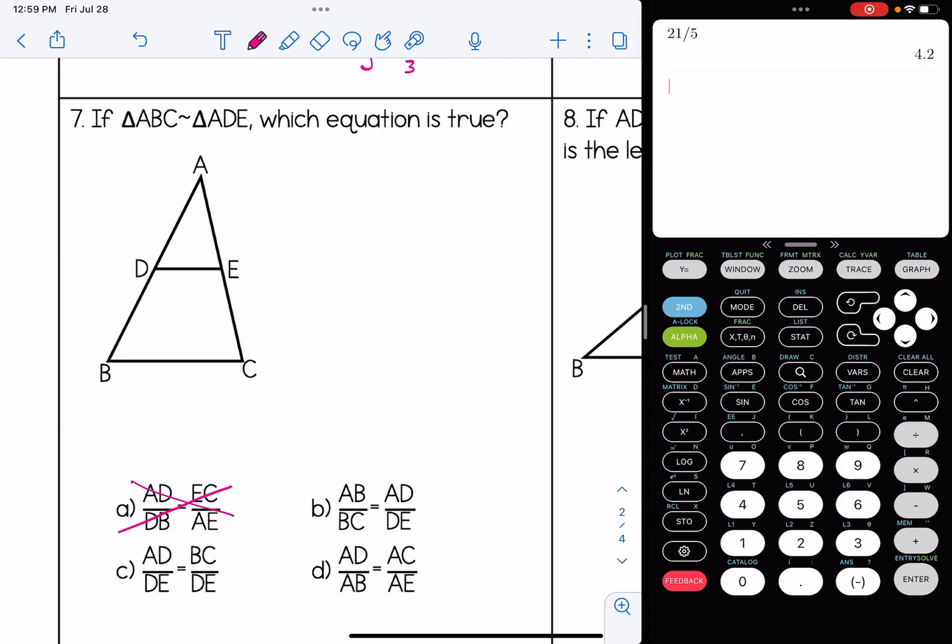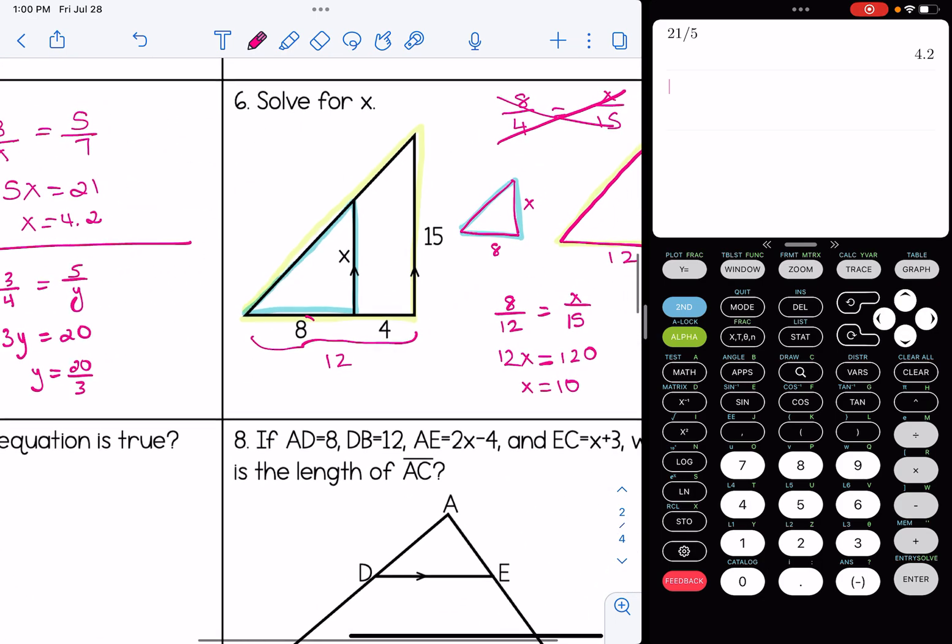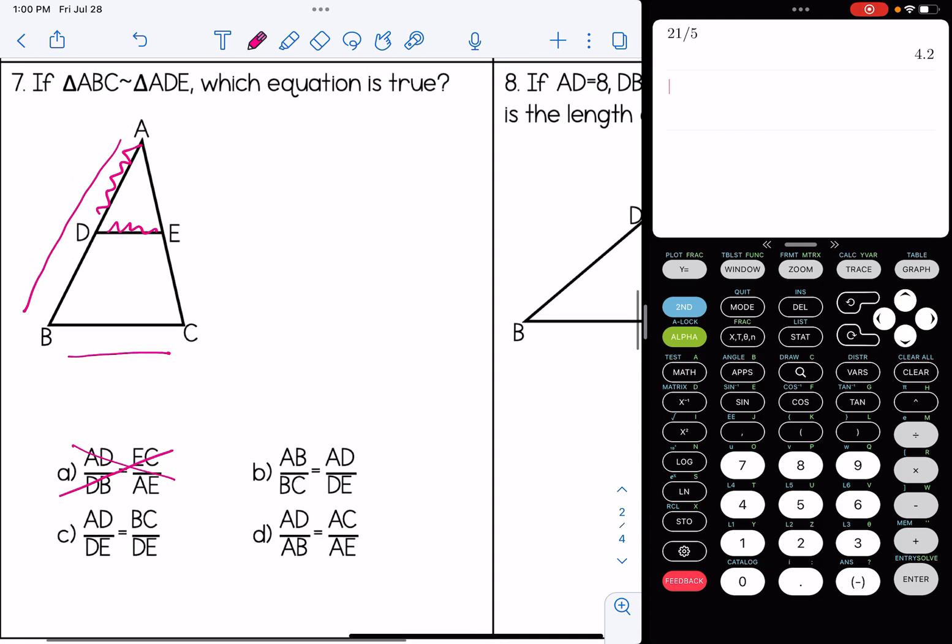Let's look at B. AB is this whole side to BC, the bottom, then AD and DE. That looks correct. That looks like it's the big triangle's left side and bottom, the small triangle's left side and bottom. Kind of reminds me of question six, just kind of a rotated version. So choice B is going to be our correct answer here.